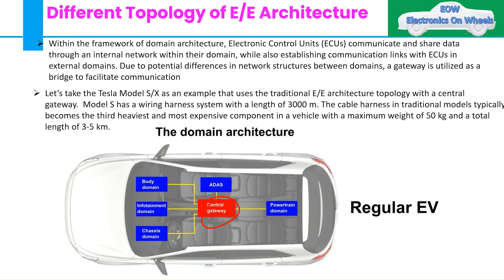Taking the Tesla Model S and X as an example — they use the traditional EE architecture topology with a central gateway. The Model S has a wiring harness system with a length of 3000 meters. In traditional domain-controlled EVs, the cable harness typically becomes the third heaviest and most expensive component in the vehicle, with a maximum weight of 50 kg and a length of three to five kilometers.